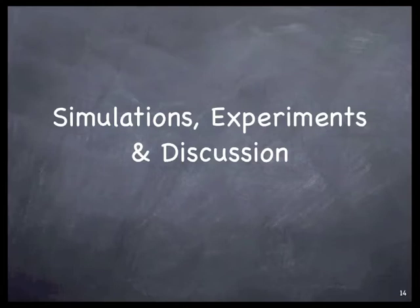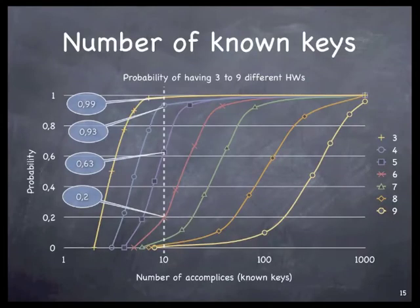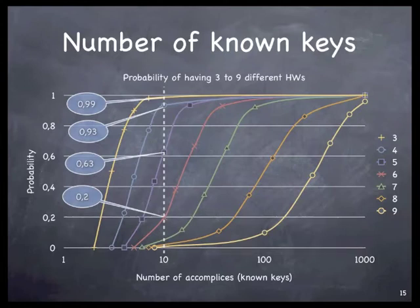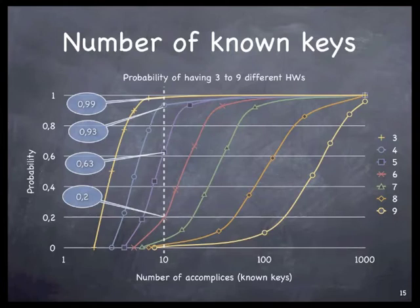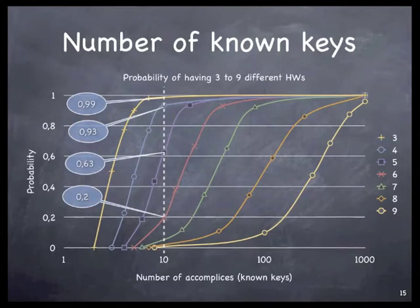Now I'm going to talk about our results. The first question is: how many accomplices, or how many known keys, do we need in set K? We need at least three different Hamming weights in set K for each byte we are trying to attack — we don't need all nine. Even with four or five different Hamming weights, it's enough to find the best point in terms of mutual information and the attack works fine. This figure shows that even with a small amount of known keys — like ten, for example — we have very good chances of finding three, four, five, or even six different Hamming weights for each byte.